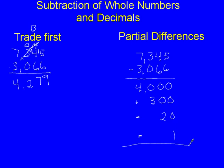Now we go through and combine those numbers to find the total: 4,000 plus 300 is 4,300, minus 20 is 4,280, minus 1 is 4,279. Those are the two different strategies for subtraction of whole numbers and decimals. I'm going to make two more videos — one just trade first, and one on partial differences that will include decimals.